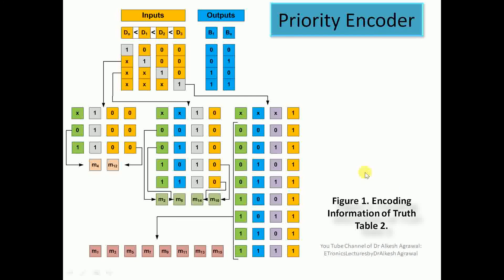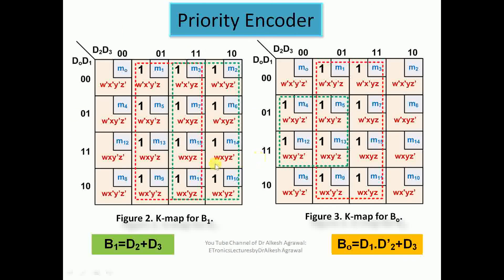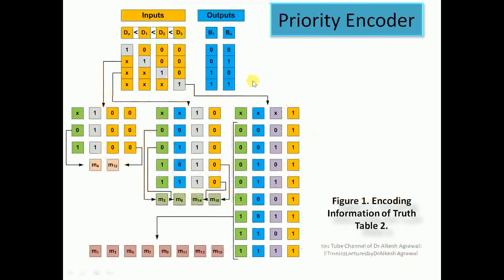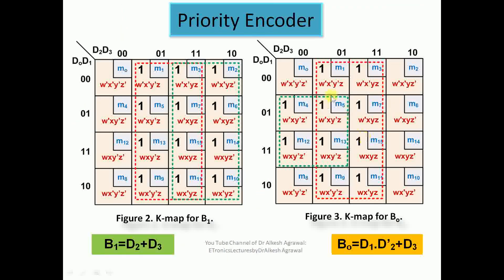For b0, the output is high for the row X X 1 0 (d2=1, d3=0), corresponding to minterms m4 and m12. It is also high for the last row where d3=1, corresponding to minterms m1, m3, m5, m7, m9, m11, m13, and m15. We place 1s at all these positions in the K-map.